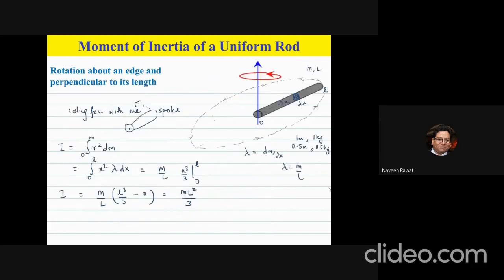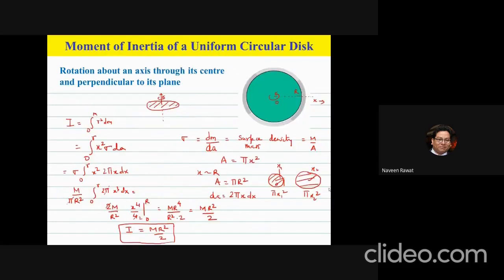Then we did the case for moment of inertia of the same rod but through the edge. After that, we did the case for a uniform circular disk, and we found the relationship I = mr²/2.